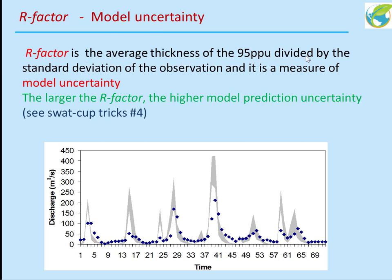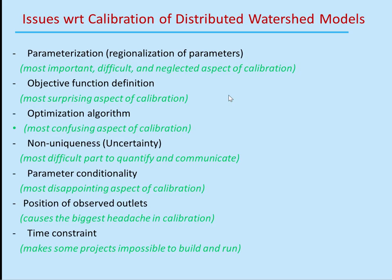R-factor is the average thickness of the 95% PPU divided by the standard deviation of the observation, and it is a measure of model uncertainty. The larger the R-factor, the higher the model prediction uncertainty. You can see more about these two factors in SWATCOP Tricks number four.